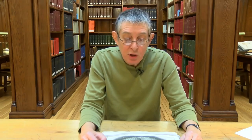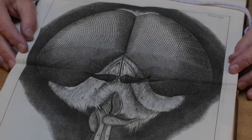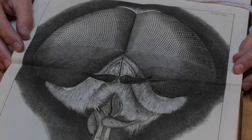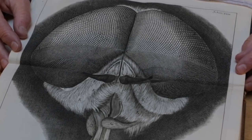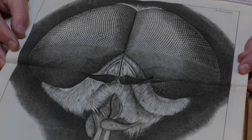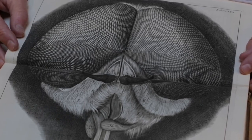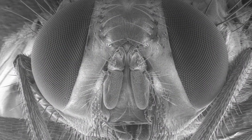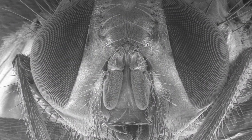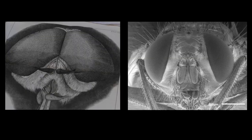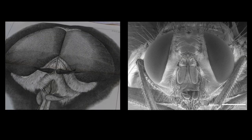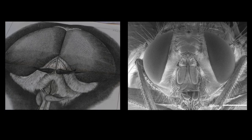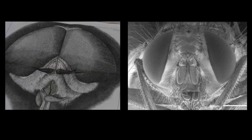Here we have the compound eye of the fly, which was astonishing to people in Hooke's day, and even today people are pretty amazed at the detail in this drawing. We can compare this with a modern electron micrograph and see the similarities between what Hooke saw and what we see in a modern scanning electron microscope at a similar magnification.